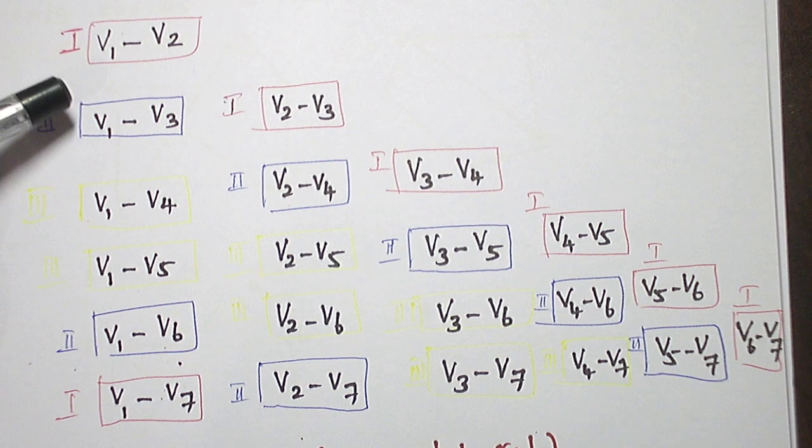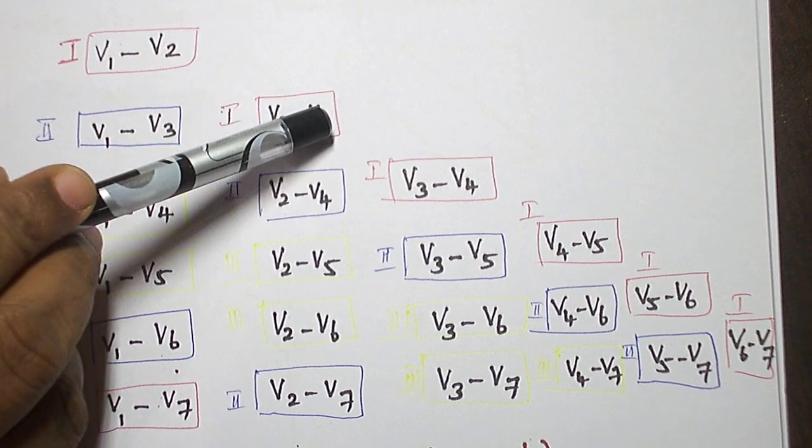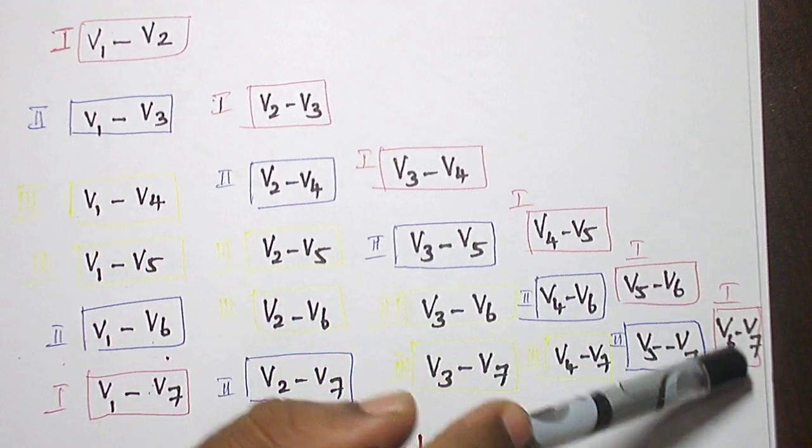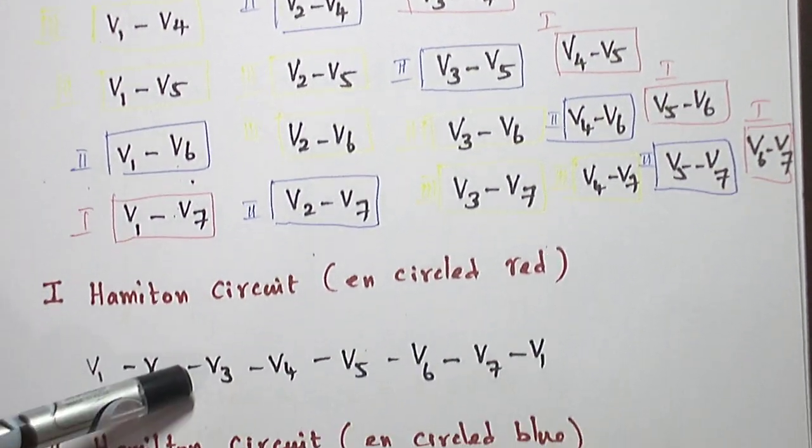Now, encircle the first Hamilton circuit: V1 to V2, V2 to V3, V3 to V4, V4 to V5, V5 to V6, V6 to V7, V7 to V1. That gives the first Hamilton circuit.